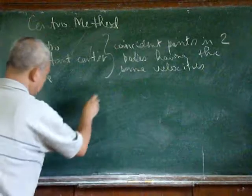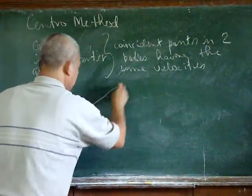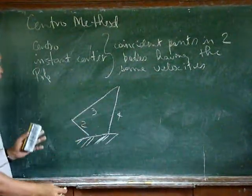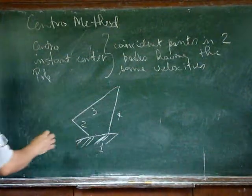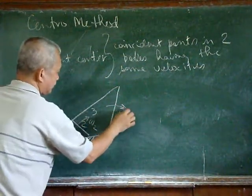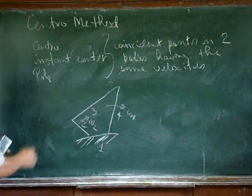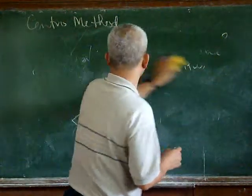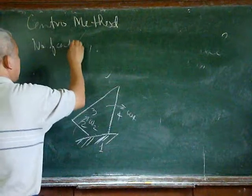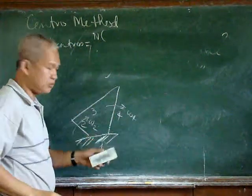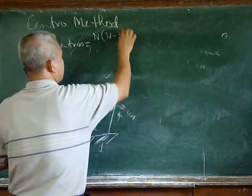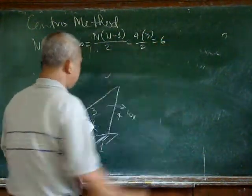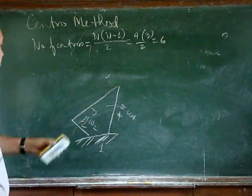Now, let's have this sample mechanism. Body 2, body 3, and body 4 are parts of the mechanism, or body 1, and there is a certain omega 2 that rotates omega 4. So by the central method, we first have to locate all the centrals. The number of centrals is equal to n times (n minus 1) over 2, and that will be 4 times 3 over 2. So this mechanism must have six centrals.